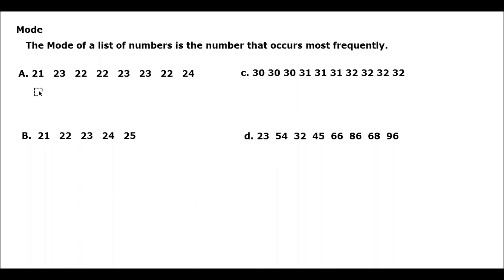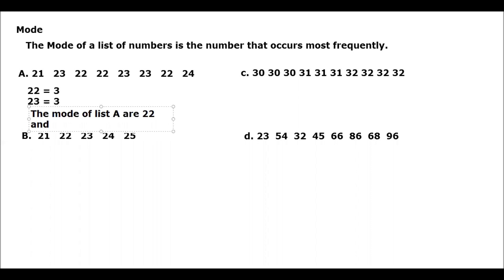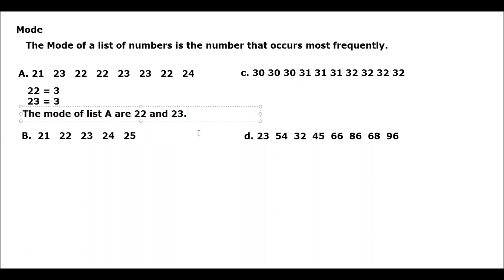For letter A, we have 21, 23, 22, 22, 23, 23, 22, and 24. For 22, we have 3 occurrences, and for 23, we also have 3 occurrences. Therefore, the mode of list A are 22 and 23.